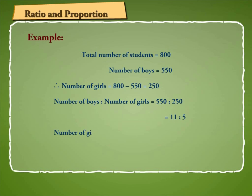Number of girls is to number of boys is equal to 250 is to 550 is equal to 5 is to 11.